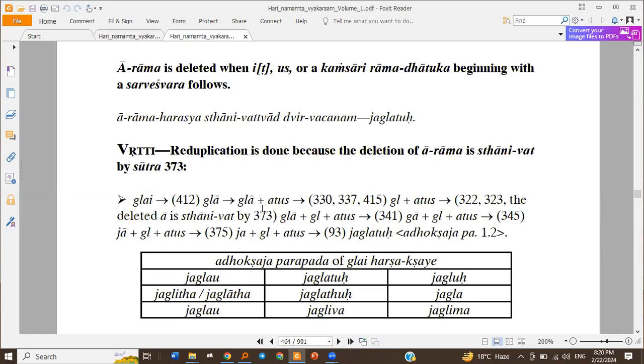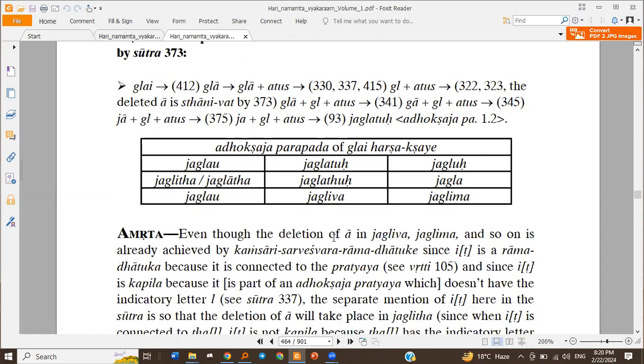And Atus 1.2. Now Atus is a Kansari Ram Dhatu Ke and it begins with the Sarveshwara, so we delete the Arama here. And then Sthani Va Thirvachanam, and then Nara Vishwajana Namadhi Shishyadri and Nara Se Vamanaha Kavarga Nara Se Chavarga, so we get Jaglatu. So Jaglau Jaglatu Jaglau Ityadi.